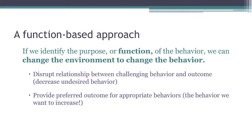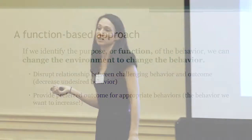That's what I mean by a function-based approach. We're identifying the why — the antecedents and the consequences that might be maintaining this behavior over time — so that we can change the environment to change the behavior. What I like most about ABA is it's so optimistic: it says we have control over so much in the environment. If we can identify the aspects of the environment shaping behavior, we can change those aspects to change the behavior. It's not just within the child; it's within the system and the environment.